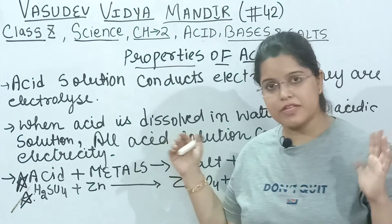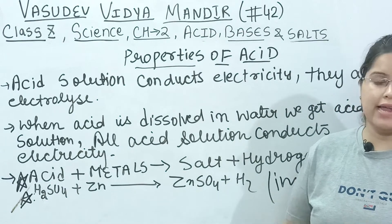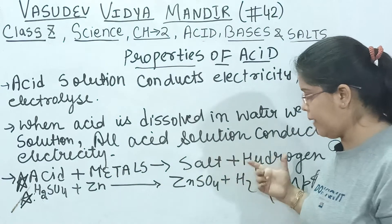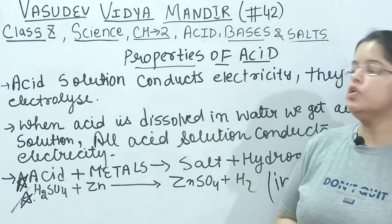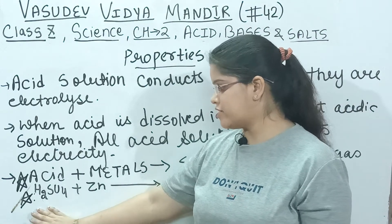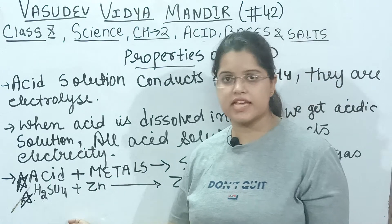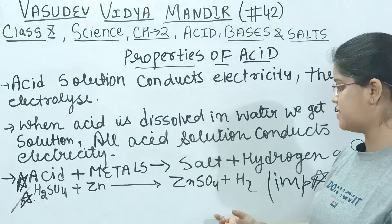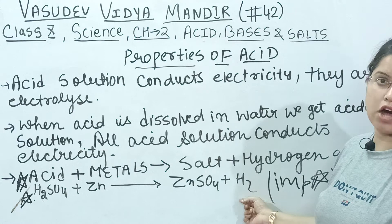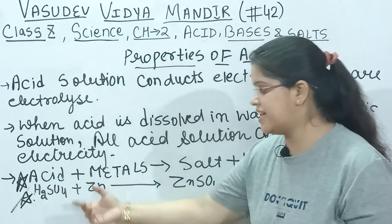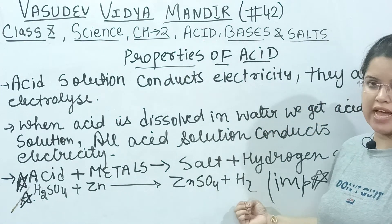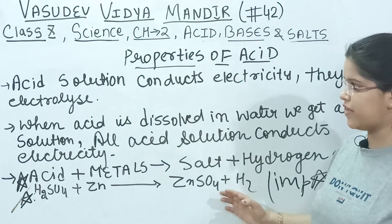If any acid reacts with metal, then a salt will be formed and hydrogen gas will be evolved. Please note this down — it is very important.